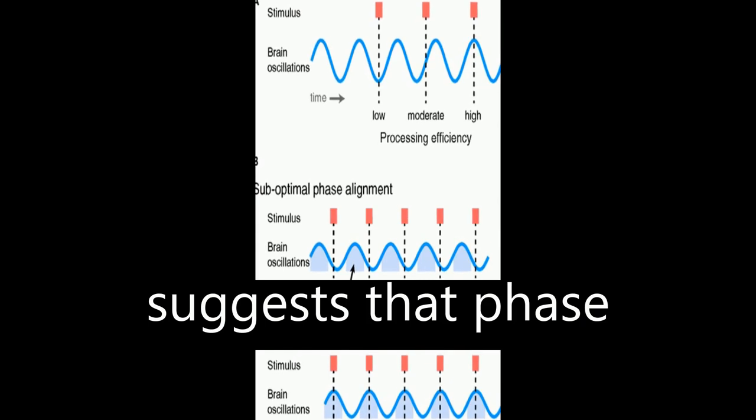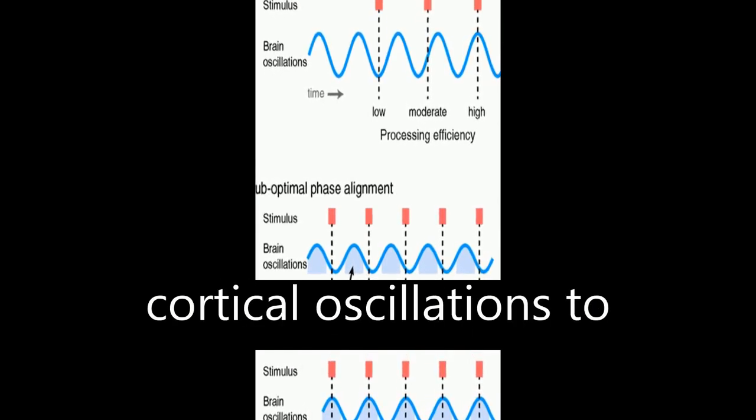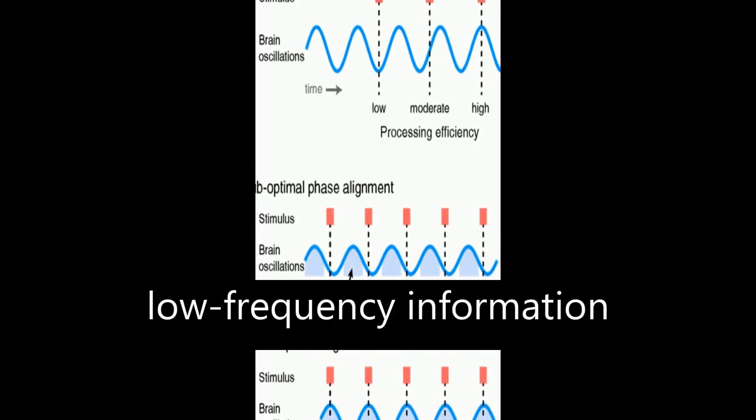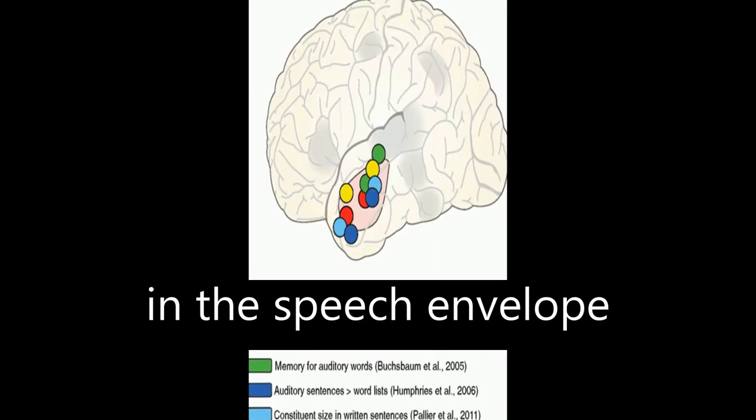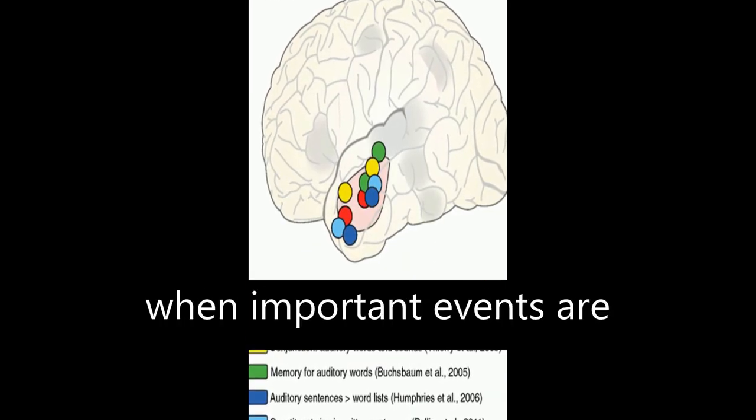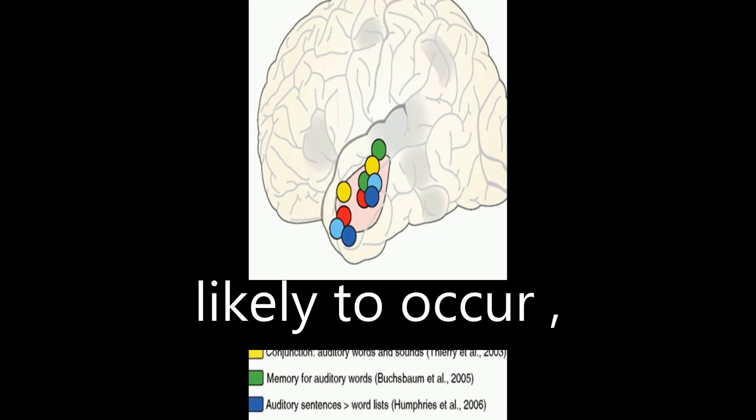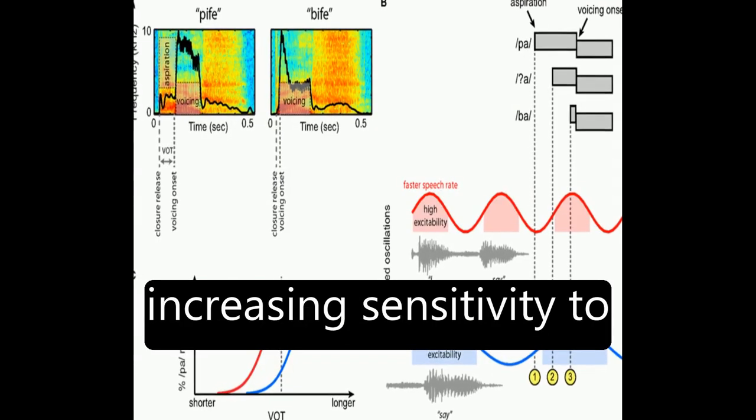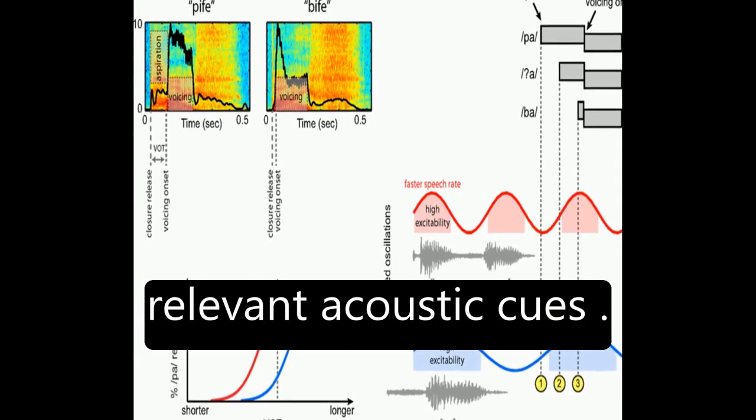Neuroimaging data suggests that phase locking by ongoing cortical oscillations to low-frequency information in the speech envelope encodes a prediction of when important events are likely to occur, increasing sensitivity to relevant acoustic cues.